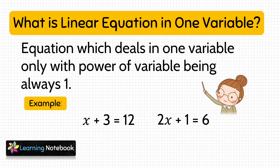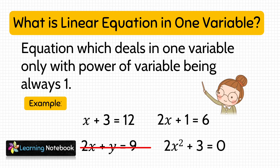Now, 2x plus y equals to 9 has two variables x and y, so this equation is not a linear equation in one variable. Another example is 2x squared plus 3 equals to 0. Though this equation has only one variable x, the power of the variable is 2 instead of 1, therefore this is also not a linear equation in one variable.